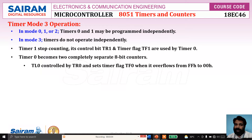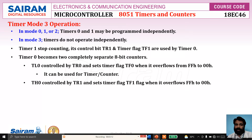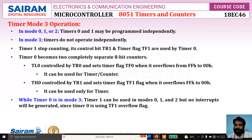TL0 is controlled by TR0 and sets the timer flag TF0 when it rolls over from FF to 00. It can be used as a timer or counter. TH0 is controlled by TR1 and sets the timer flag TF1. It can be used only as a timer. So while timer 0 is in mode 3, timer 1 can be used in mode 0, 1, or 2.